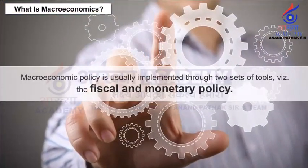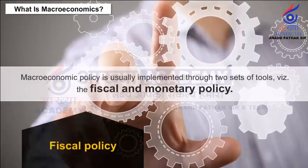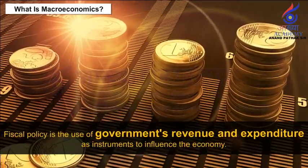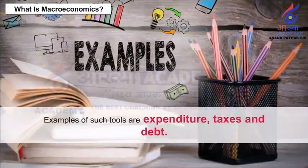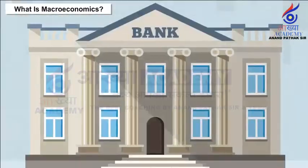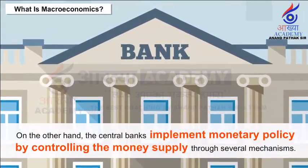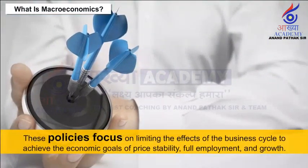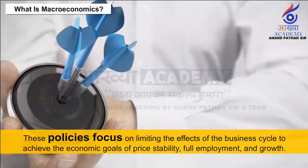Macroeconomic policy is usually implemented through two sets of tools: fiscal and monetary policy. Fiscal policy is the use of government's revenue and expenditure as instruments to influence the economy — examples of such tools are expenditure, taxes and debt. On the other hand, central banks implement monetary policy by controlling the money supply through several mechanisms. These policies focus on limiting the effects of the business cycle to achieve the economic goals of price stability, full employment and growth.